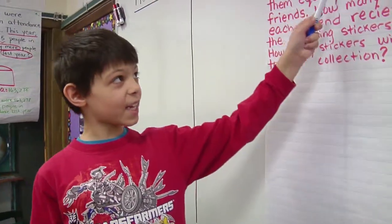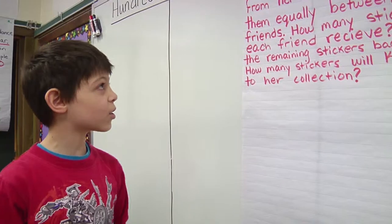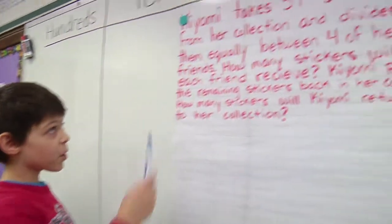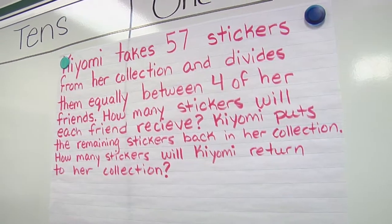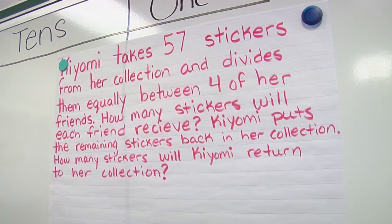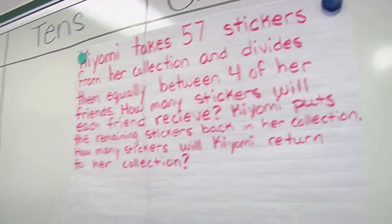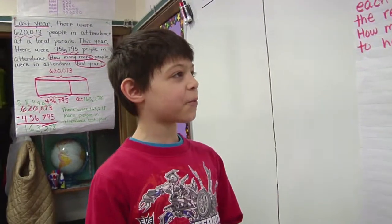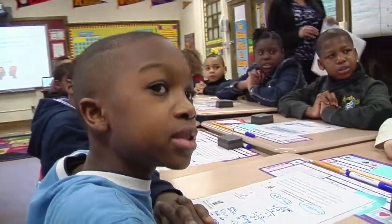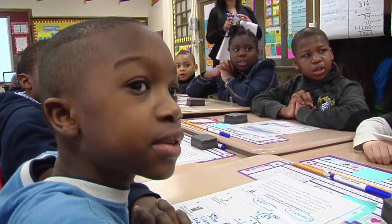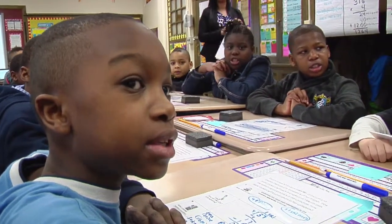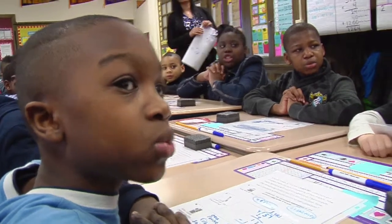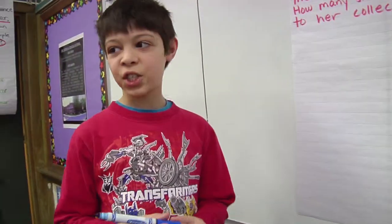Kiyomi takes 57 stickers from her collection and divides them equally between four of her friends. How many stickers will each friend receive? Kiyomi puts the remaining stickers back in her collection. How many stickers will return to her collection?